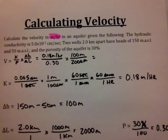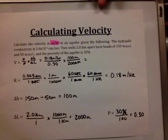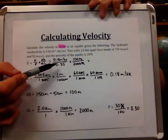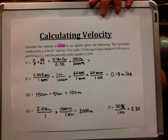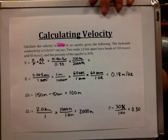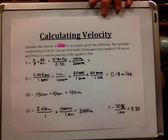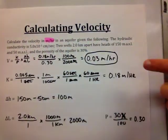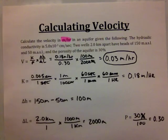We are now ready to plug into the calculator for velocity. K is in meters per hour, P is unitless, and meters over meters cancel for delta H over delta L, confirming our answer will be in meters per hour. Calculating: 0.18 divided by 0.30, times 100 divided by 2,000. The velocity is 0.03 meters per hour, which is in the units that were asked for.